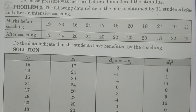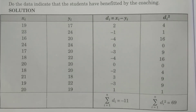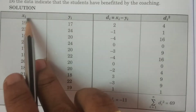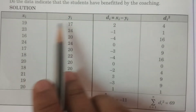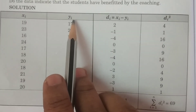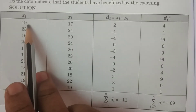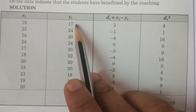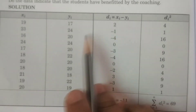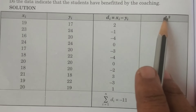In problem one I explained that dᵢ is given. Here you also have to calculate dᵢ. In the solution, xᵢ and yᵢ are the marks before and after coaching respectively. xᵢ values are observations like 19, 23, etc., and yᵢ after coaching are values like 17, 24, etc. You have to calculate two columns: dᵢ = xᵢ − yᵢ, and dᵢ².